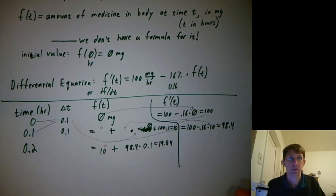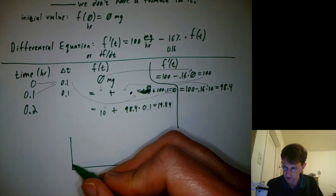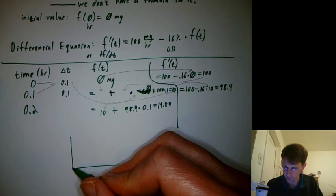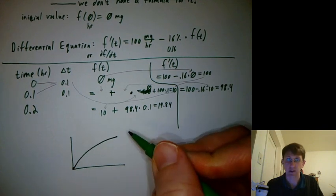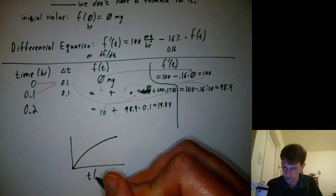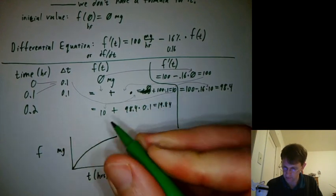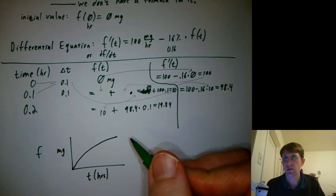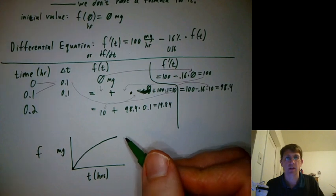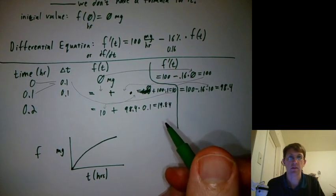We already made a video where we did basically that, and we saw that f went basically like this. So this was time in hours, and this was f in milligrams. And we asked, does it keep increasing forever? Does it level out somewhere? Does it go above something and then come back down? All kinds of interesting questions we can ask.